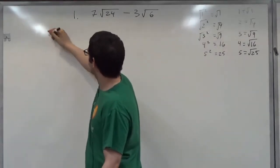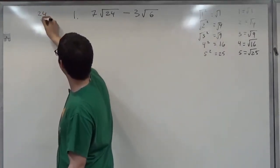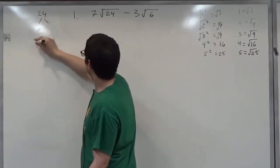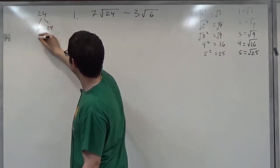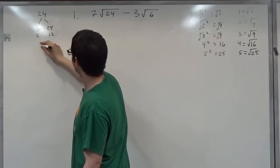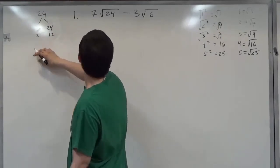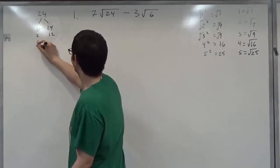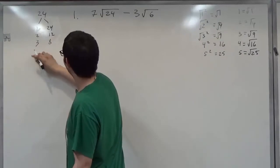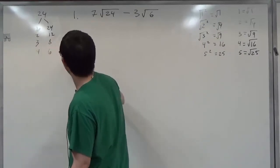We can start with twenty-four and find what numbers multiply to twenty-four. We have one and twenty-four, two and twelve, three and eight, and four and six.